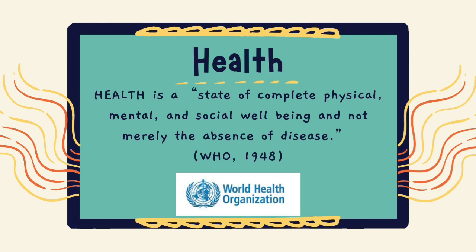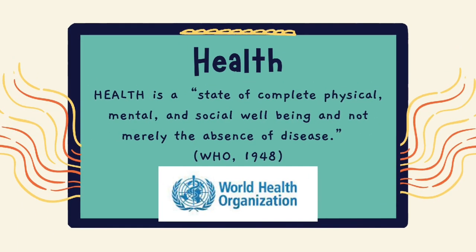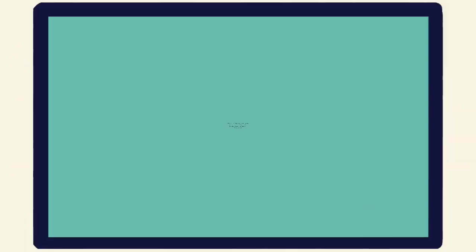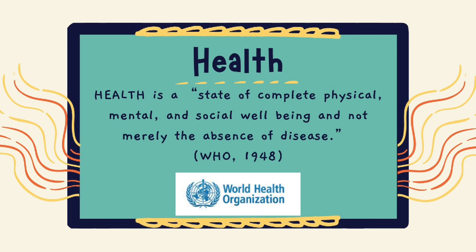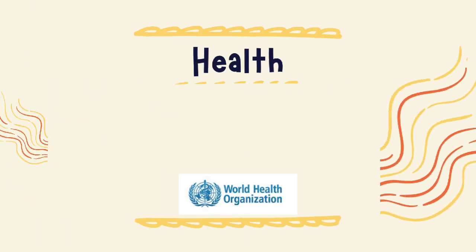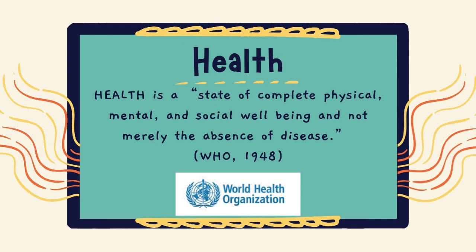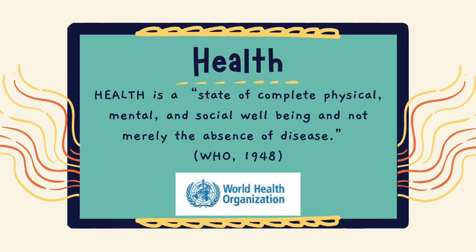Think of it this way: if a person is experiencing physical pain, it will affect their mental state, and once their mental state is affected, it will eventually affect their relationships with people — and the other way around is also applicable. If a person is involved in a toxic relationship, they may become anxious, possibly depressed, and later develop physical illness brought about by that impaired mental state. A person can only be considered healthy if there is a good balance of physical, mental, and social well-being, because our relationships also affect our mind and body.